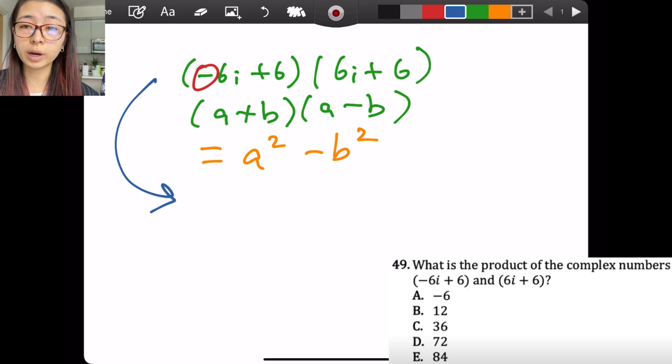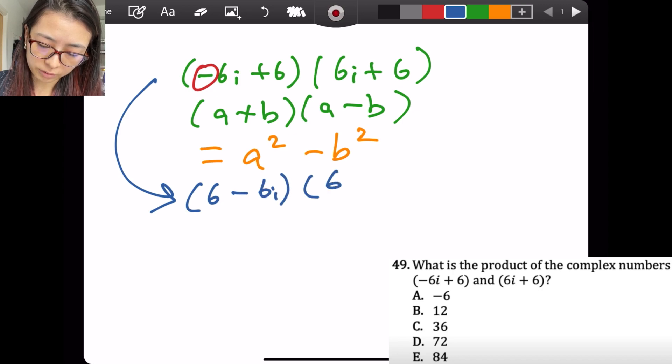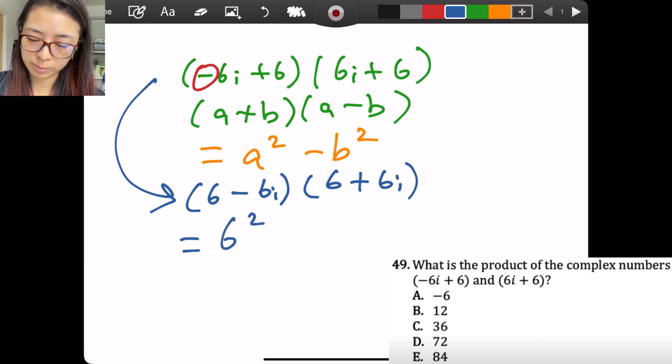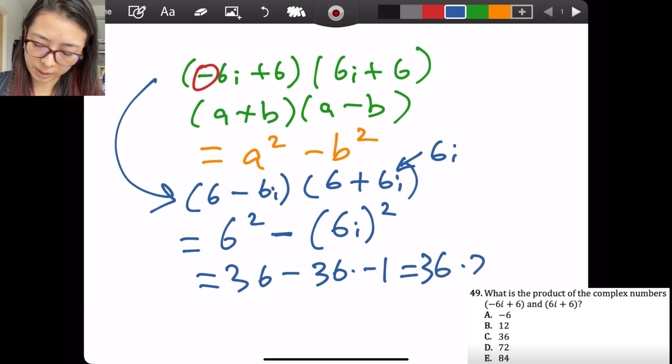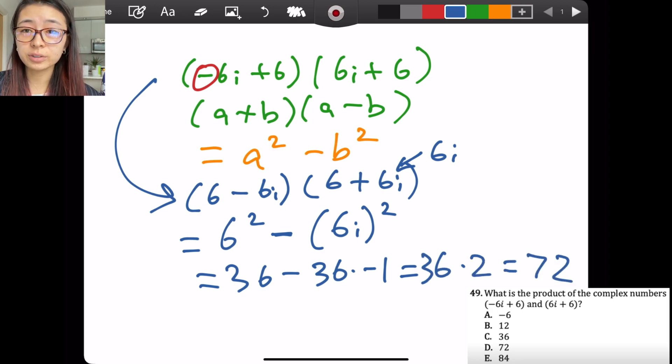Once you get more familiar with this, you don't have to write every step, but I'm going to change the order of how these are represented and see that this would be the same as a squared, which is the 6 squared, then minus b squared. B here is 6i. We have 6 squared minus 6i squared. That equals 36 minus 36 times negative 1, which equals 36 times 2, and it's 72. And that's faster than FOILing.